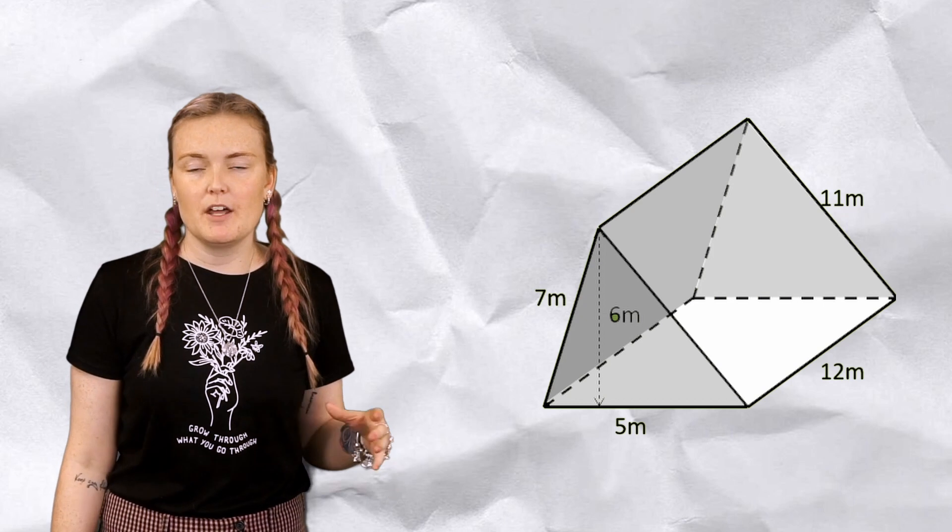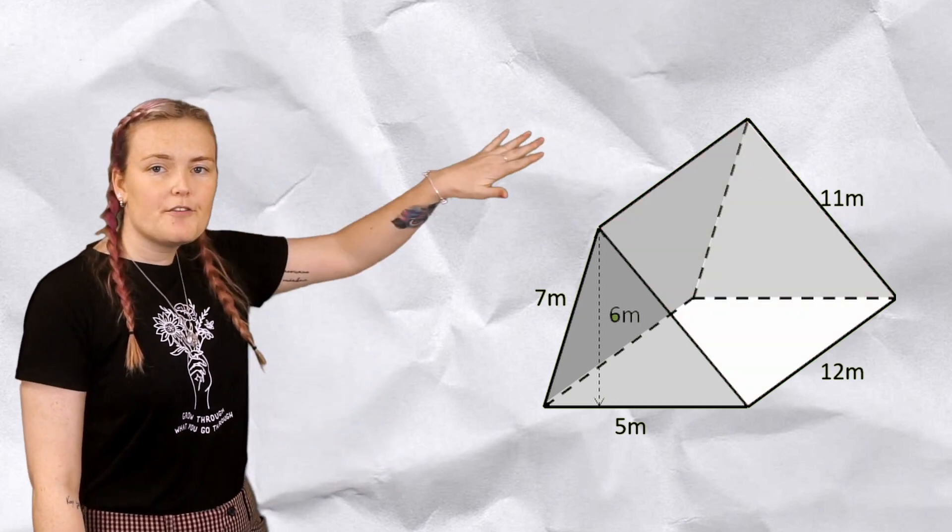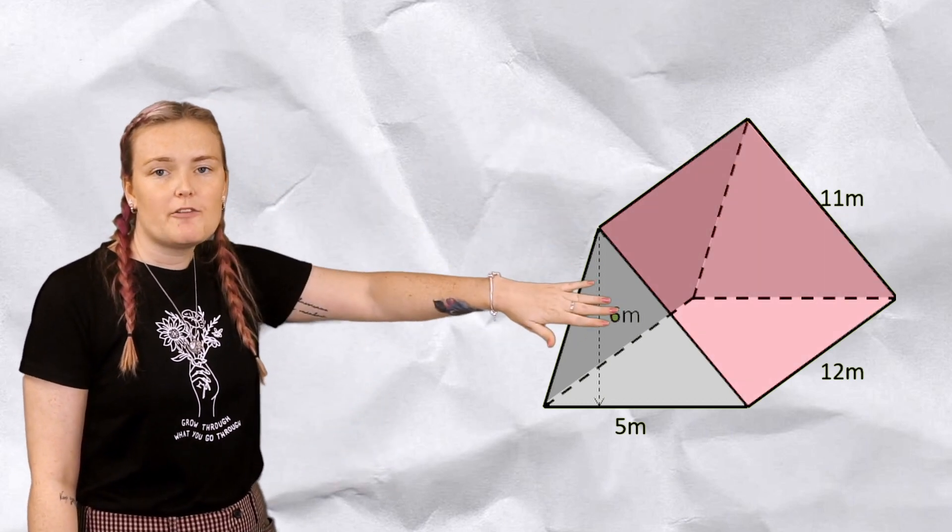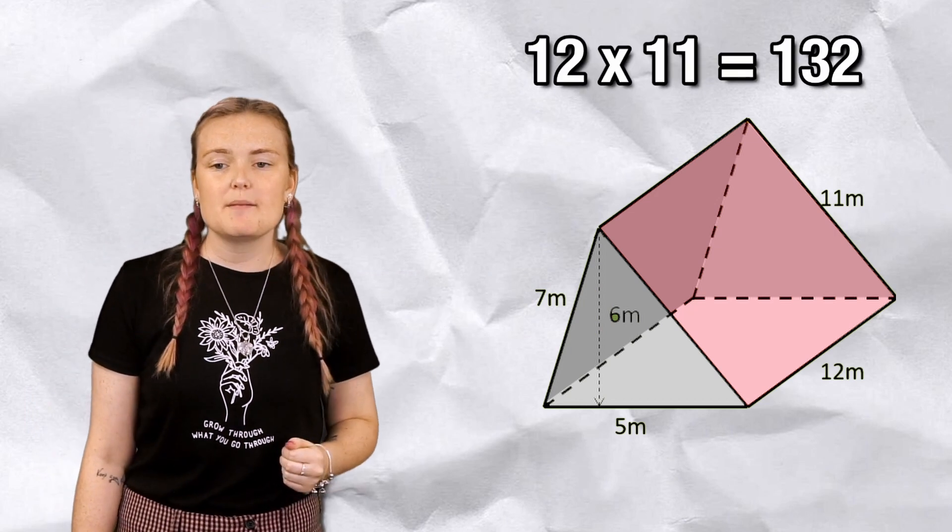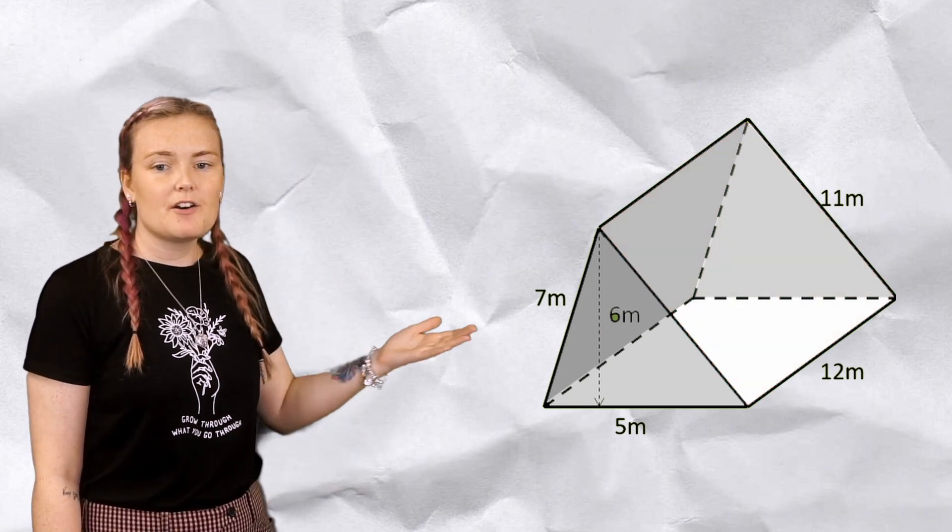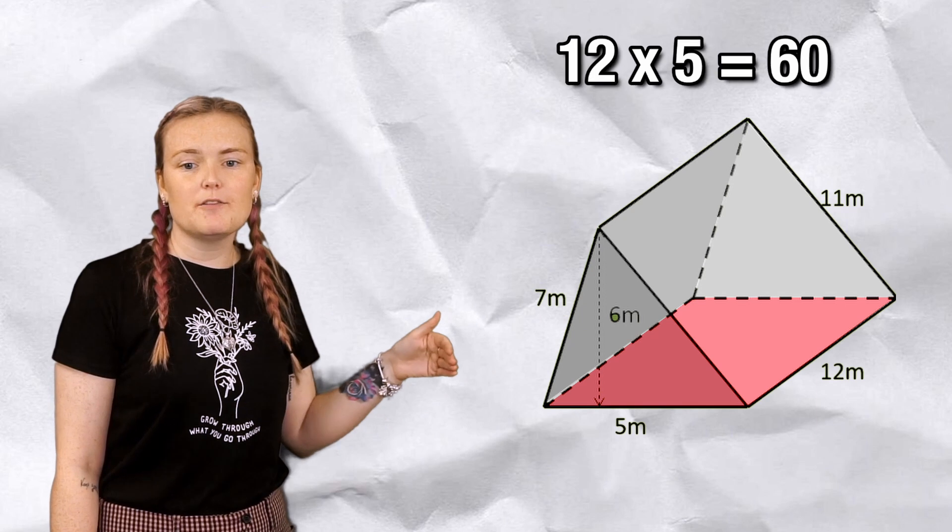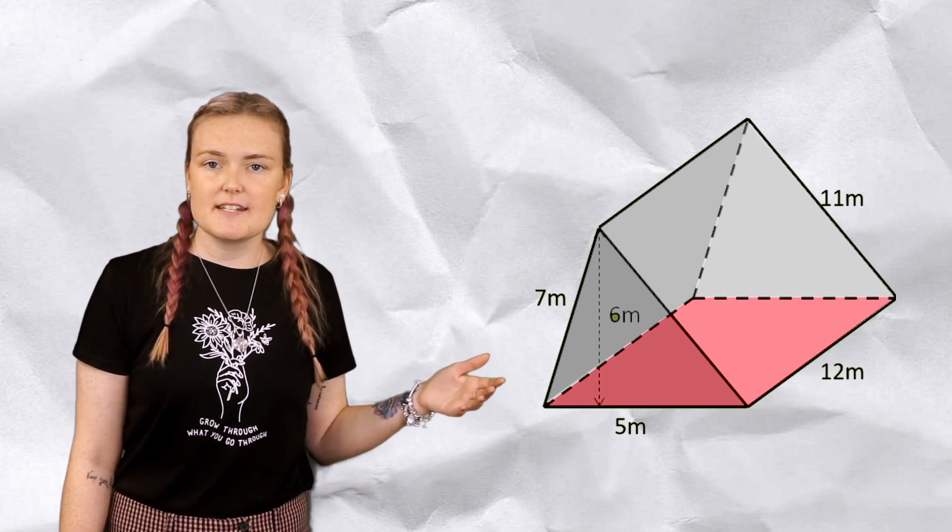Now let's leave that for a moment and look at the rectangles. I've got a front face here that's 12 by 11, so 12 times 11 is 132. I've then got the bottom which is 12 by 5, 12 times 5 is 60.